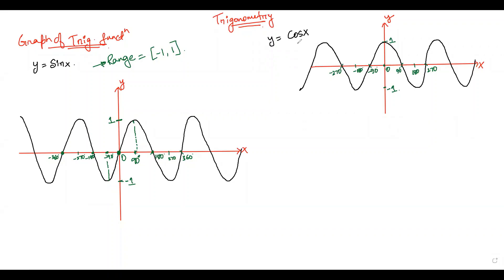Similarly, the graph of y = cos x is also a curve that oscillates between -1 and 1. We can verify: at x = 0, cos 0 is 1; at x = 90, cos 90 is 0; at x = 180, cos 180 is -1; at x = -90, cos(-90) is 0; at x = -180, cos(-180) is -1 and so on. Since y = cos x also oscillates between -1 and 1, the range of y = cos x is also [-1, 1], both -1 and 1 included.